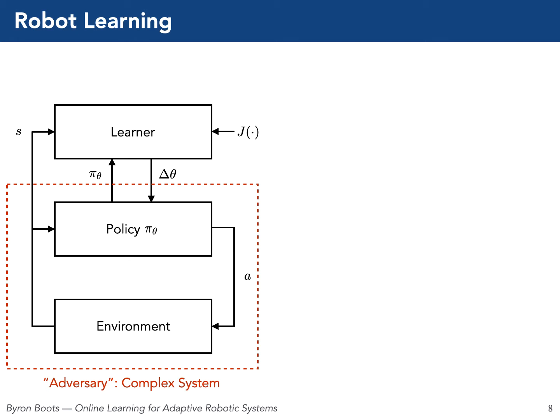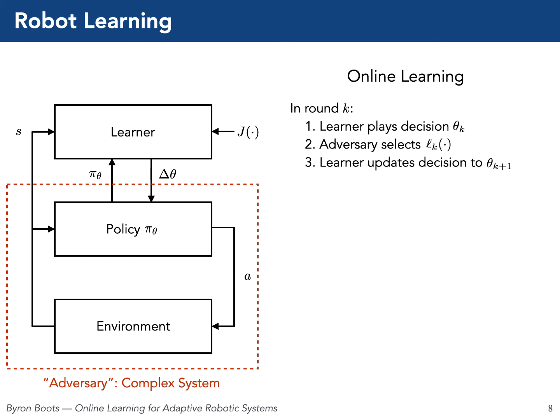Alternatively we can focus on the learner. The learner is interacting with a complex system consisting of the robot in its environment. We can think of this setup as online learning. At every round K, the learner will play some decision which is a set of parameters for the policy, theta K. At each time step the learner is selecting a policy. We can think of the adversary as selecting a loss function, and then the learner updates its decision based on that loss in order to try to improve at some task — theta K plus one. This is the basic online learning idea.